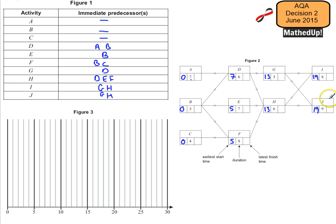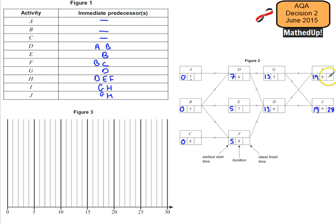We're now going to put in our latest finish time - the latest time that an activity can finish without delaying the project. J is going to finish: if it starts after 19 minutes, we add 9 to get 28 minutes. That's the latest time we can finish without delaying the project. And I, although 19 plus 8 is 27, it has the luxury of a float, because it can also finish after 28 minutes without delaying the project. So we put 28 in for both I and J.